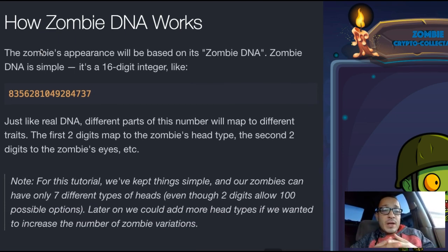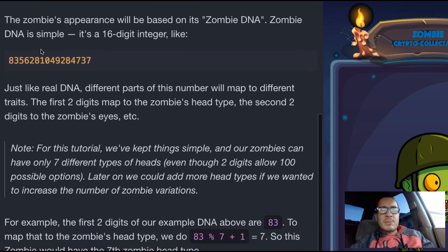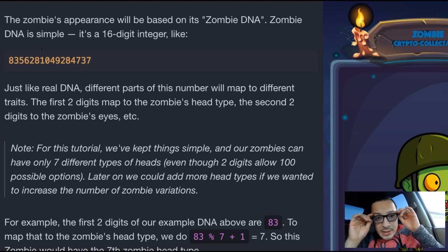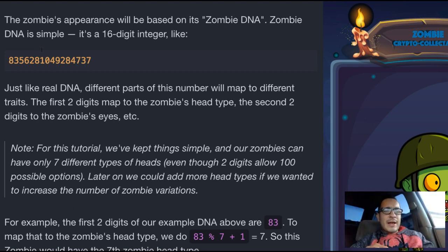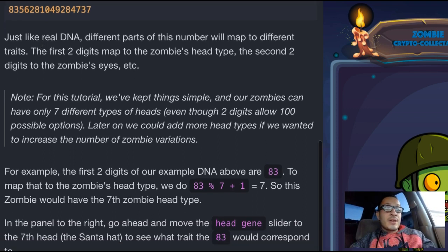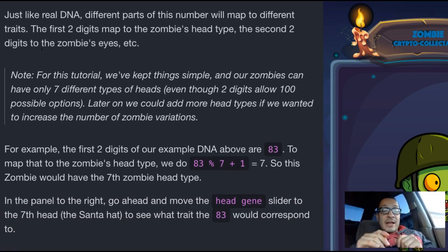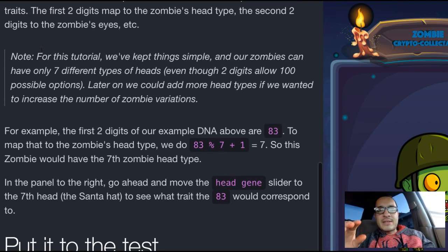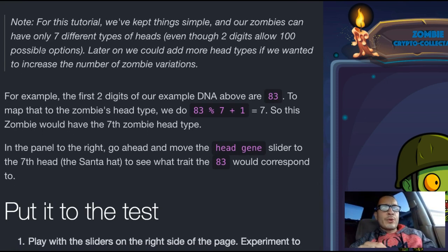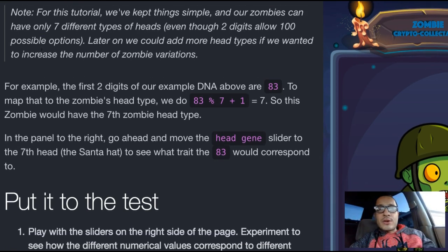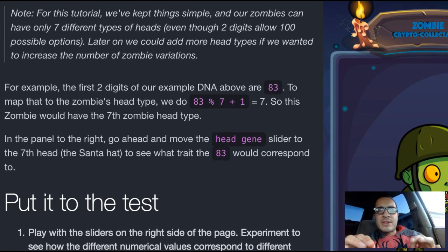How zombie DNA works: the zombie's appearance will be based on its zombie DNA. Zombie DNA is simple — it's a 16-digit integer. Just like real DNA, different parts of this number will map to different traits. The first two digits map to the zombie's head type, and the second two digits map to the zombie's eyes. For this tutorial, we're going to keep things simple, and our zombie can have only seven different types of heads, even though two digits allow 100 possible options.